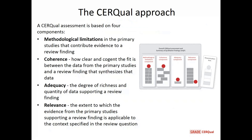Briefly, the CIRQAL approach is a combination. The assessment is based on four components: you assess methodological limitations of the primary studies, coherence of the finding, adequacy of the data that contributes to the finding, and the relevance of the primary studies that support the review finding, and you make an overall assessment.